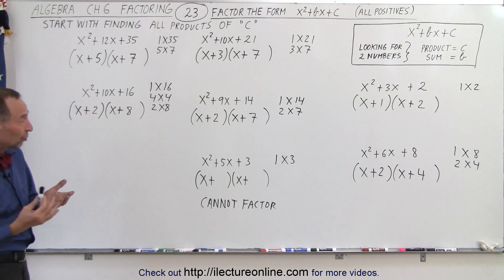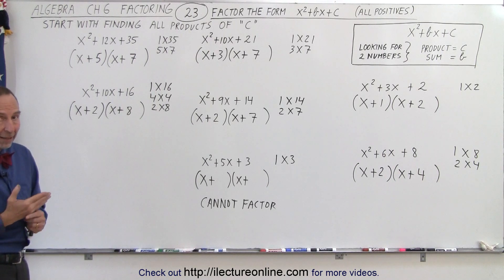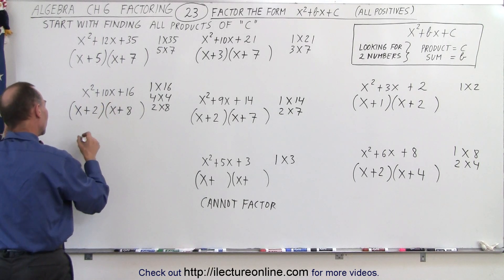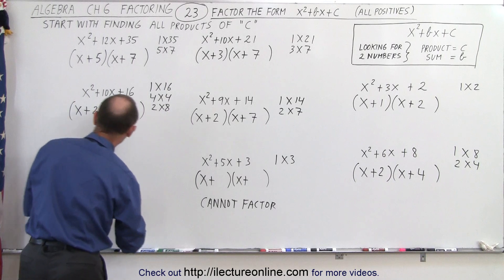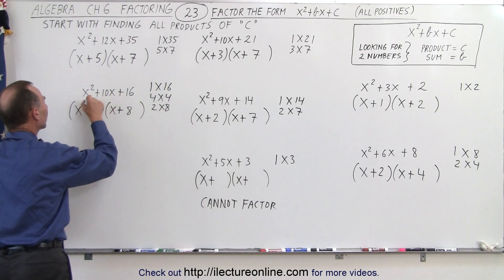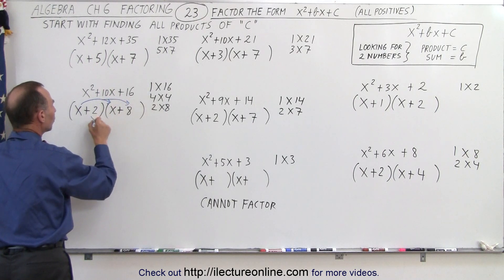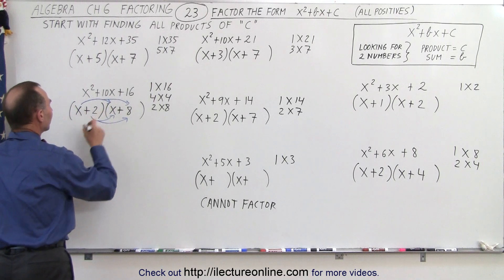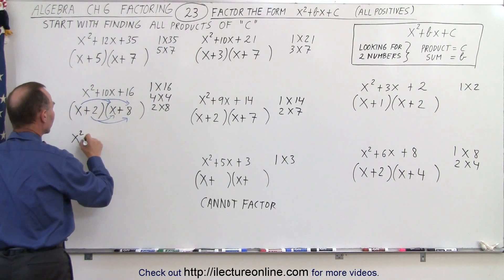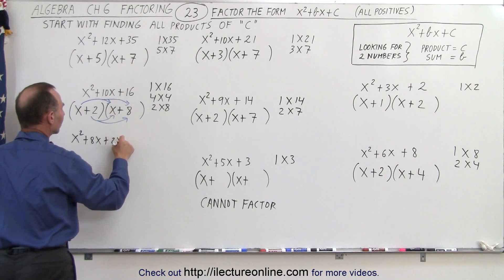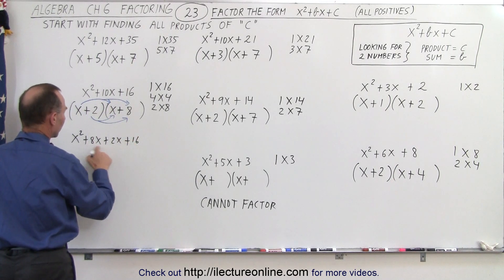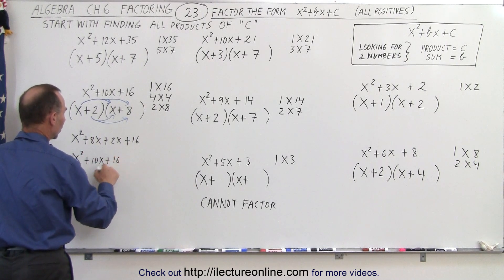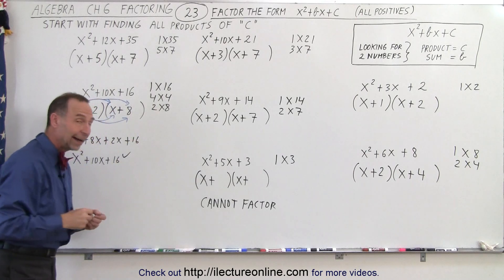When you're done and you want to check to make sure you did this correctly, what you can do is multiply them back together again and see if this is indeed you get back what you started with. So we're going to take the two binomials, x plus 2 and x plus 8. So multiply the x times the x and the x times the 8, 2 times x, 2 times 8. Let's see what we get. So x times x is x squared. x times 8 is plus 8x. 2 times x is plus 2x. And 2 times 8 is plus 16. When I combine the two middle terms, we get x squared plus 10x plus 16, which is what I started with. So therefore, I know I did it correctly.